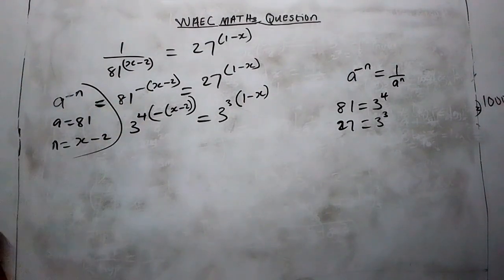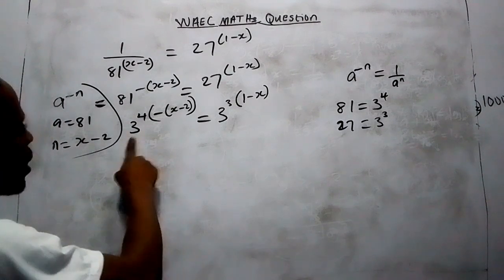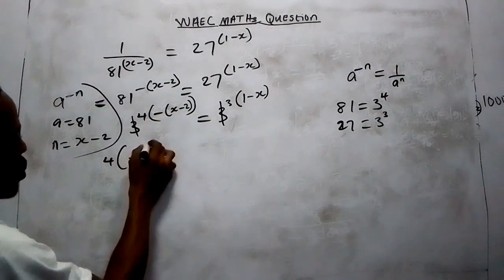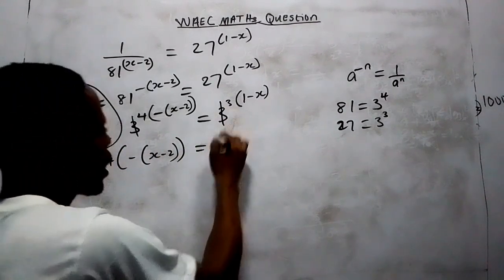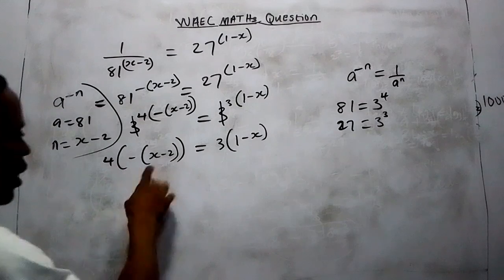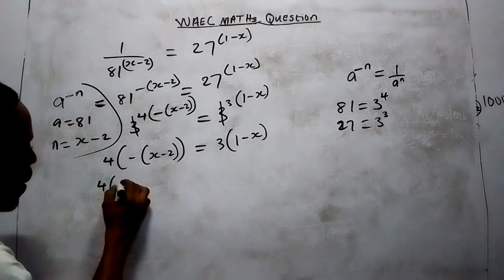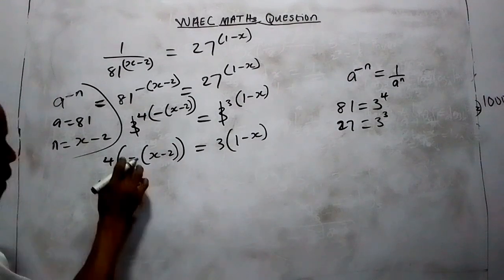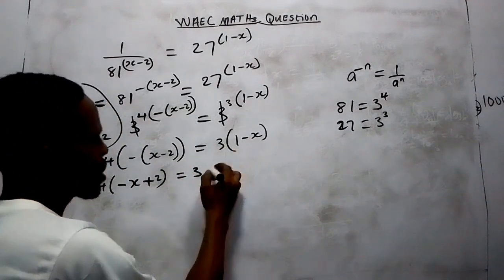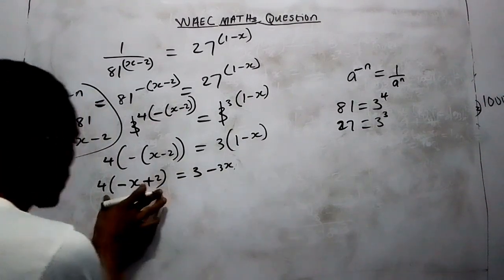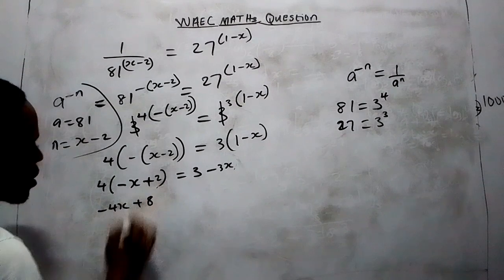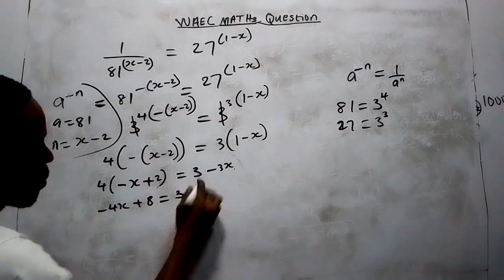Now, since the bases are the same, we equate the exponents: 4 times minus (S minus 2) equals 3 times (1 minus S). Opening the left bracket: 4 times minus S gives minus 4S, and 4 times minus times minus 2 gives plus 8. So the left side becomes minus 4S plus 8. Opening the right bracket: 3 times 1 gives 3, and 3 times minus S gives minus 3S. So the right side becomes 3 minus 3S.